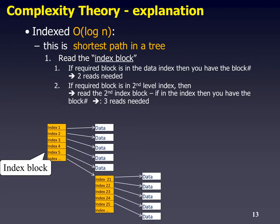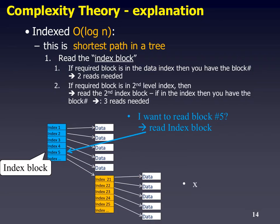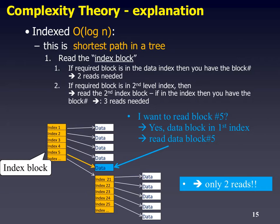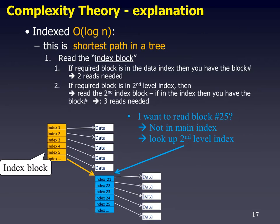The indexed version is what we call logarithmic — proportional to the shortest path in a tree, specifically the depth of the tree. In this case we've got three levels, so the maximum reads needed in this file is three. For blocks near the top it takes two reads; for deeper blocks, say block 21 or block 25, it takes three reads. So: read one, read two, read three — only three reads needed. Very efficient.